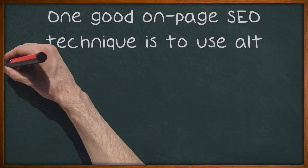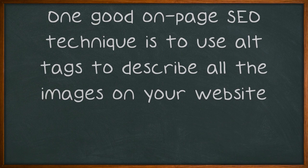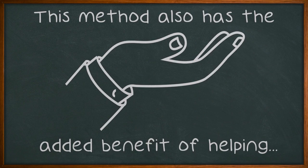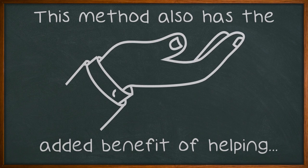One good on-page SEO technique is to use alt tags to describe all the images on your website. By doing this, search engines will be able to index the images and find your pages. This method also has the added benefit of helping website visitors who are using text-only browsers.